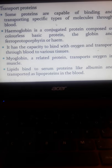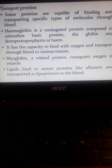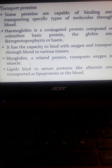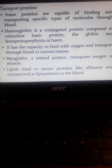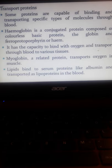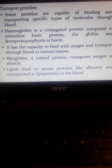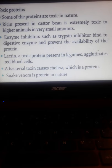Transport proteins are capable of binding and transport. These are involved in the transport of oxygen especially in the blood. Hemoglobin is a conjugated protein with globin and ferro protoporphyrin or the heme group. It has a capacity to bind with oxygen and transport throughout the blood to various tissues of the body. Myoglobin, a related protein, transfers oxygen in the muscles. Myoglobin is an oxygen binder. Lipids bind to serum proteins like albumin and are transported by different lipoproteins: LDL, the low-density lipoproteins, and HDL, high-density lipoproteins.